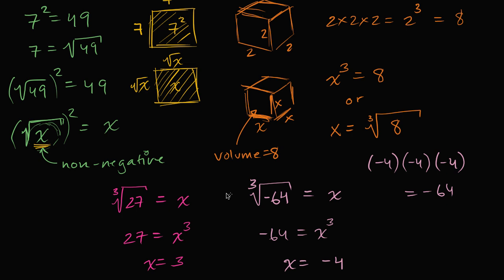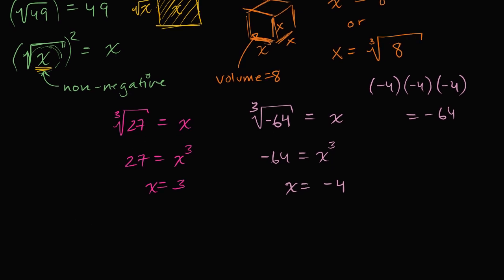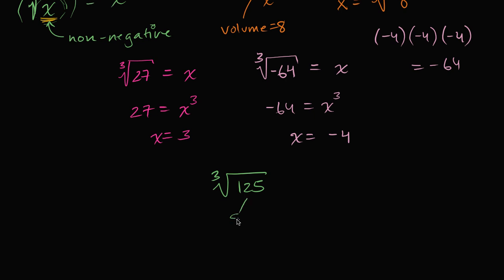You don't have to stop at cube roots — you can take a 4th root, 5th root, 6th root, or 7th root of numbers, which we'll discuss later. Most of what you'll see is square roots and occasionally cube roots. Now, if I give you an arbitrary number like the cube root of 125, the easiest way to figure it out is prime factorization. 125 is 5 times 25, which is 5 times 5 — so it's 5 to the third power. The cube root of 5 to the third is equal to 5.